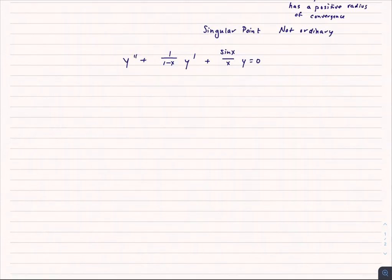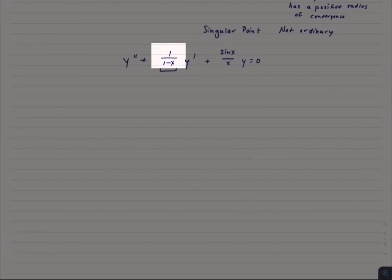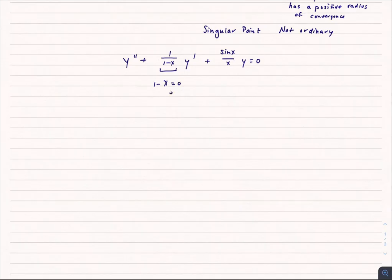So let's look at p of x first. It certainly looks like if 1 minus x equals 0 or x is equal to 1, bad things happen. We're dividing by 0. So at x equals 0, this is called a singular point.